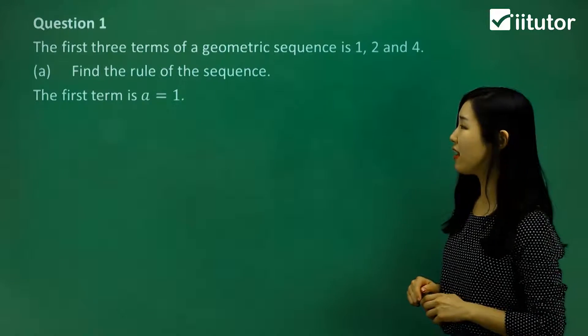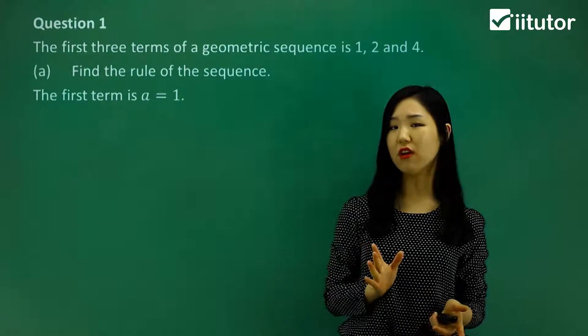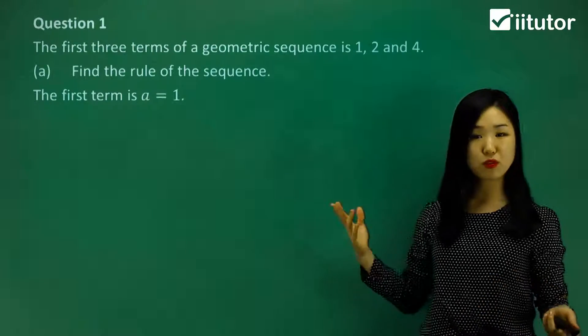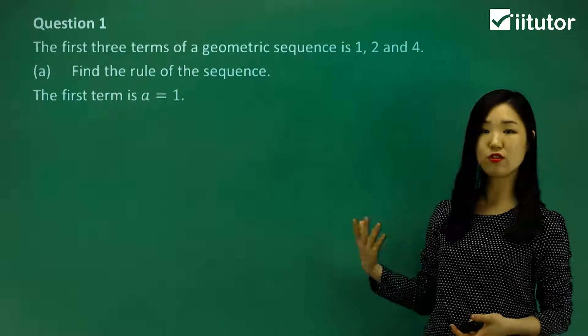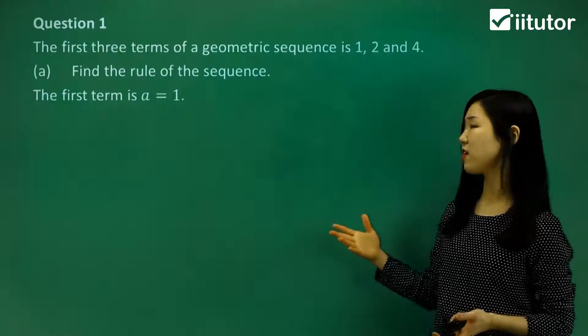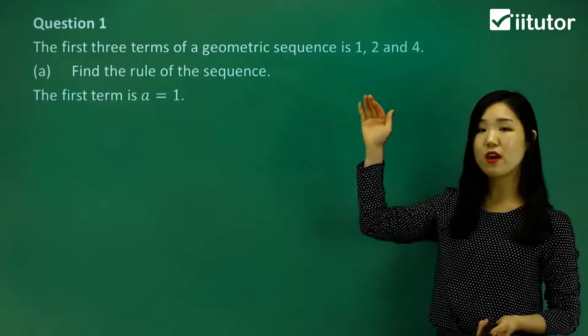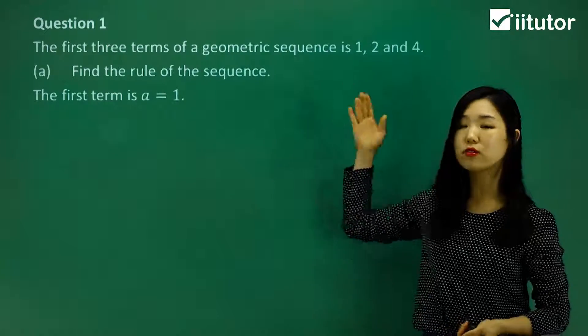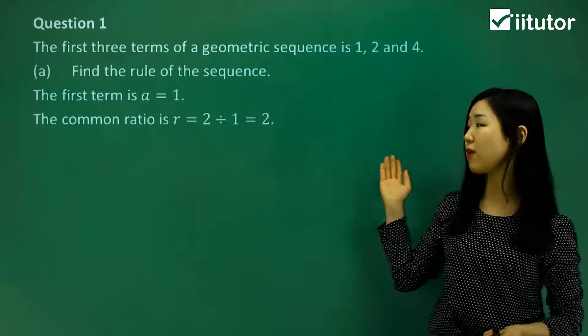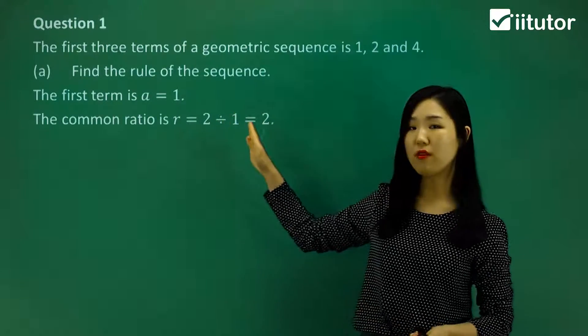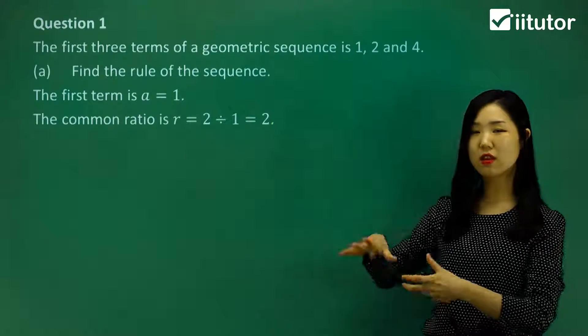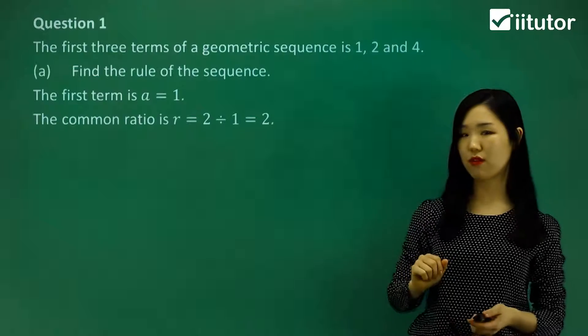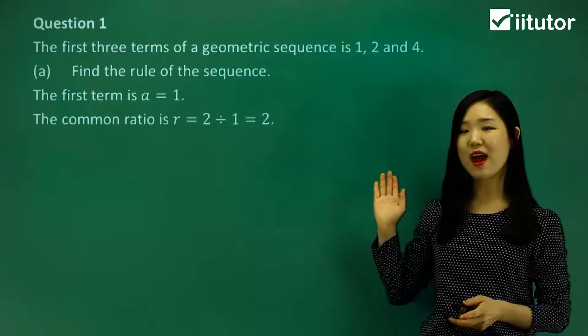And what we're going to do now is find the common ratio. Just ask yourself, 1 times what is 2? It must be 2. 2 times what is 4? It's again 2. The other way you can figure this out is going backwards. So 4 divided by 2 gives us 2, and 2 divided by 1 also gives us 2. So the common ratio is 2. You do the second one divided by the first one, any number divided by the number prior to it, you'll get the common ratio. It's going to be 2.